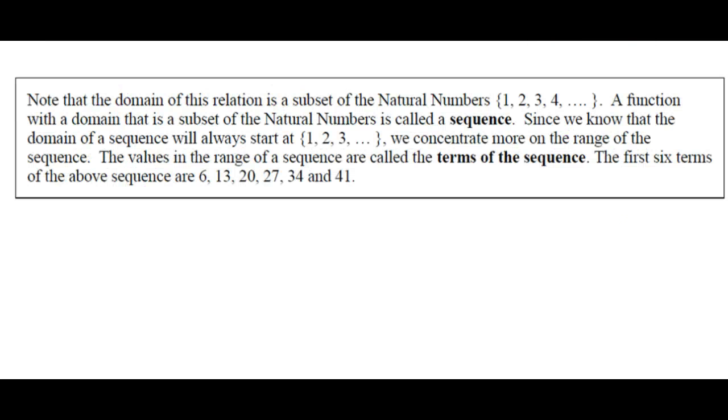Note that the domain of this relation is a subset of the natural numbers, 1, 2, 3, 4, dot dot dot—and there should be three. What's three dots called? Oh my gosh. Starts with an e. Ellipsis. Yeah. Just means and so on, right? Keep going. A function with a domain that is a subset of the natural numbers is called a sequence.